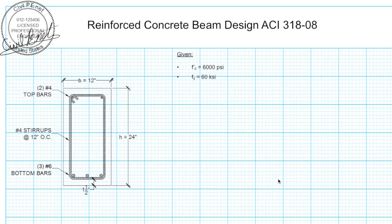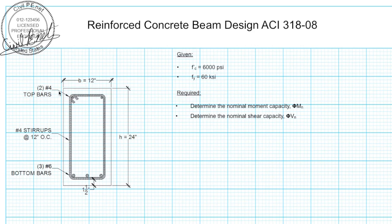Today we're going to be analyzing a simple rectangular concrete beam and determining its moment and shear capacity. What we have is a rectangular beam 12 inches wide, 24 inches tall. It's reinforced with three number six bottom bars, number four stirrups at 12 inches on center, and two number four top bars. We're going to determine the nominal moment capacity and the nominal shear capacity of this section. The compressive strength of the concrete is 6,000 psi.